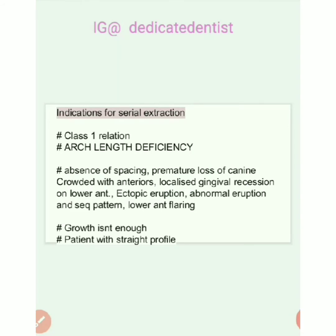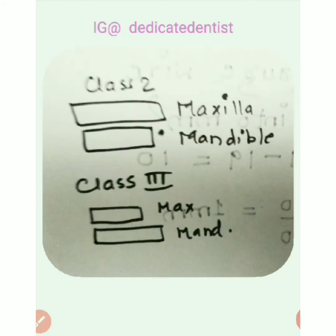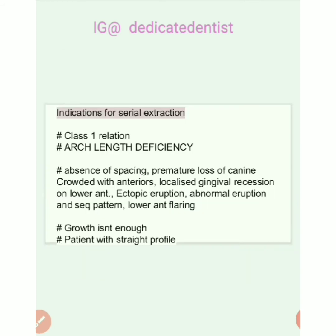The reason we do serial extraction only in Class I cases and don't do expansion is because in Class II and Class III either of the arches are overgrown or large. In Class II, the maxilla is prognathic — there's enough skeletal base for expansion. In Class III, the mandible has a large size, so we can go for expansion. In Class I, we already have a small skeletal base, so instead of expansion we go for extraction.